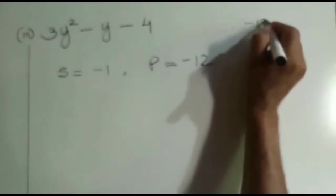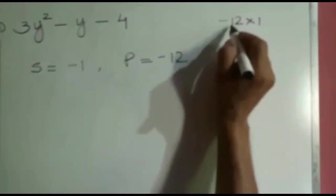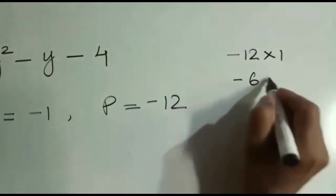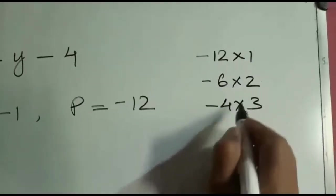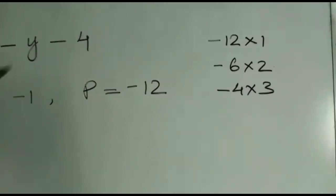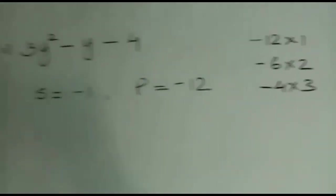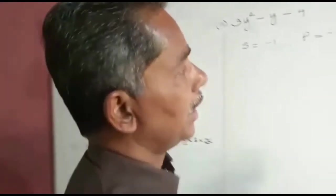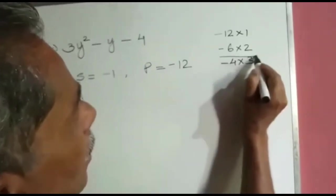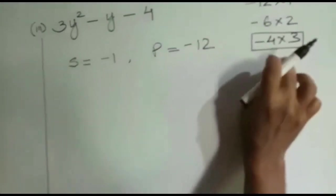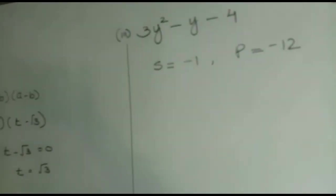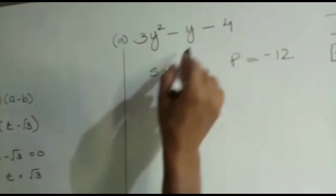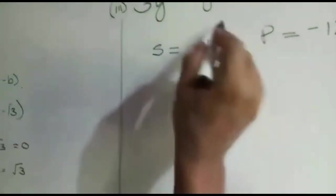So factoring -12 as -12 × 1, -6 × 2, -4 × 3 - you can see in all three cases the product is -12, but only in the last factor the sum is also -1 and the product is -12. So we factorize this term by splitting the middle term as -4 and 3.